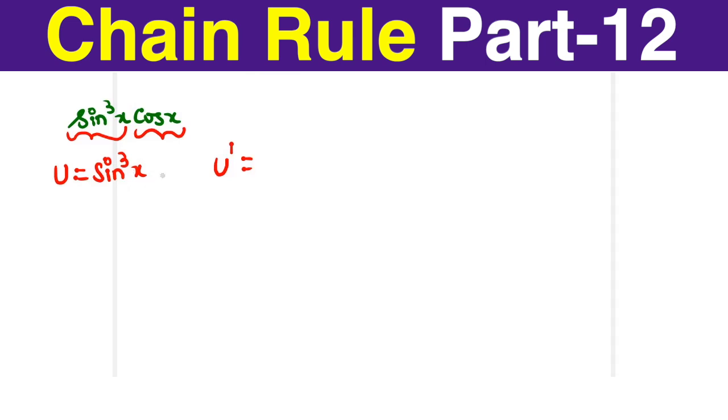It looks as t cube. Differentiator of t cube is 3t square. This is 3 sin square x followed by differentiation of t which is differentiation of sin x that is cos x.